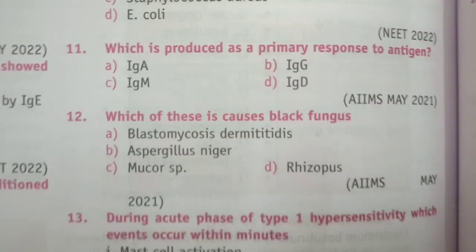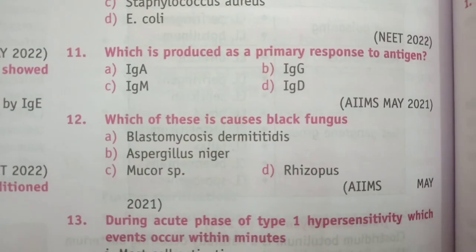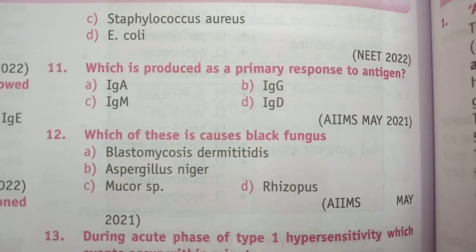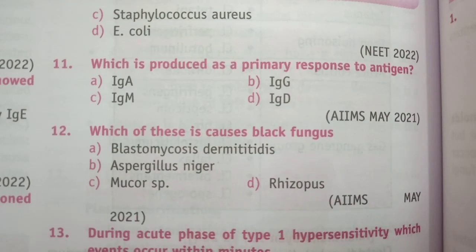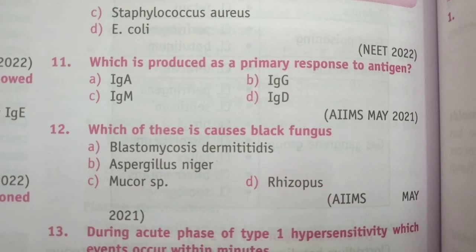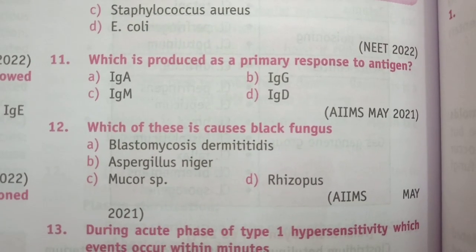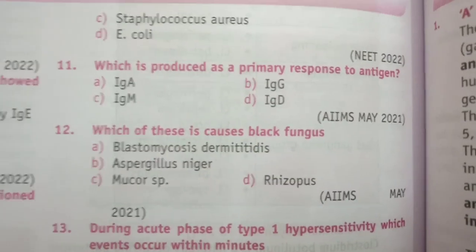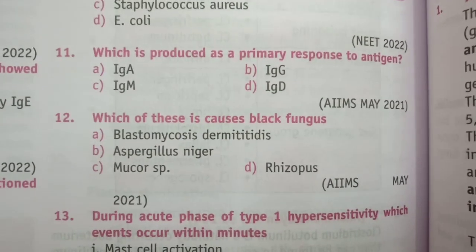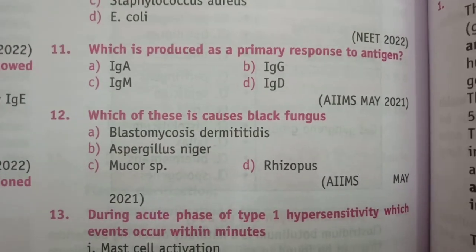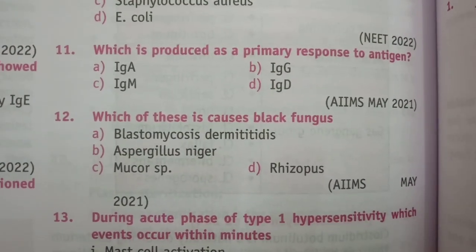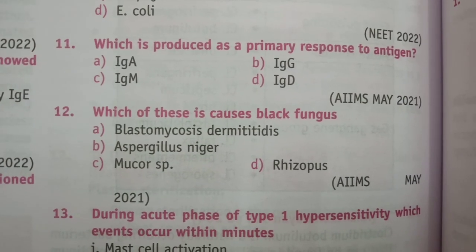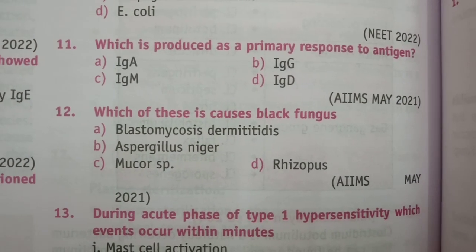Question 12: Which of these causes black fungus? Blastomycosis, Traumatitis, Aspergillus niger, Mucor species, or Rhizopus. The answer is D, Rhizopus.